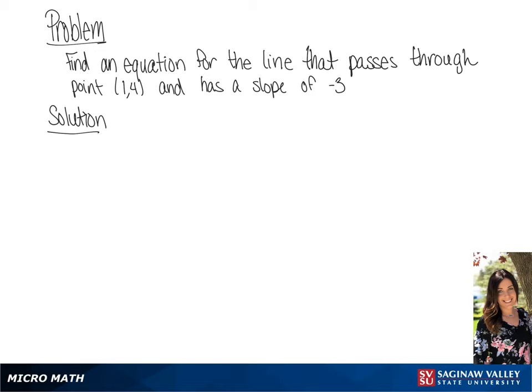We're trying to find an equation for the line that passes through point (1, 4) and has a slope of negative 3.